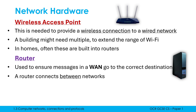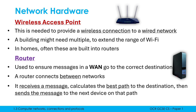A router sounds like quite a simple job, but it's really important. The router will receive a message and calculate the best path to the destination — this matters because often there are multiple different paths from source to destination. Once it decides the best path, it sends the message to the next device on that path. That route calculation is really important so messages go to the correct place and avoid congested routes.